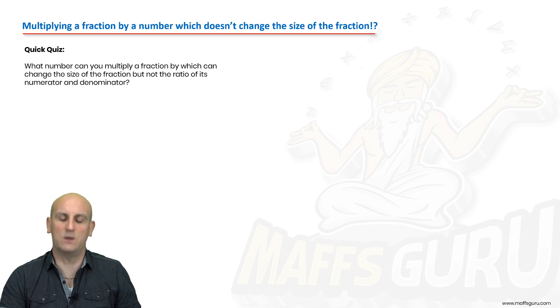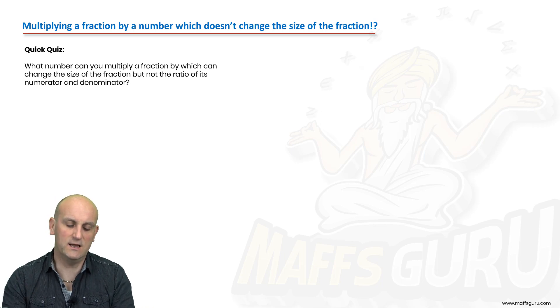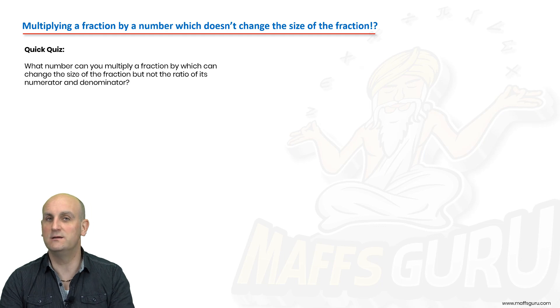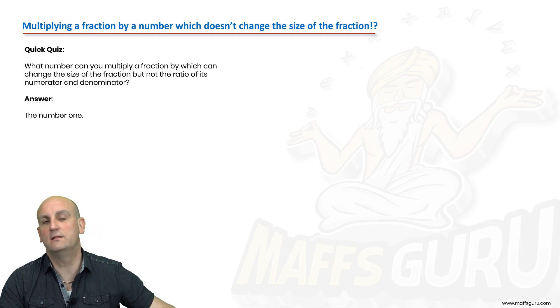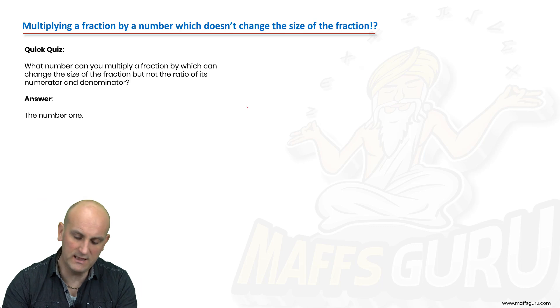Here's a quick quiz. What number can you multiply a fraction by which will change the size of the fraction, but not the ratio of its numerator and denominator? The answer is the number 1. Yes, indeed, the number 1. If I have a half times 1 on 1, what do I get? I get a half.